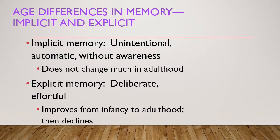Age differences in memory can be implicit and explicit. The characteristics of implicit memory are that it is unintentional, automatic, without awareness, and does not change much in adulthood. Examples of implicit memory include singing a familiar song, riding a bike, brushing your teeth, and typing on your computer keyboard.